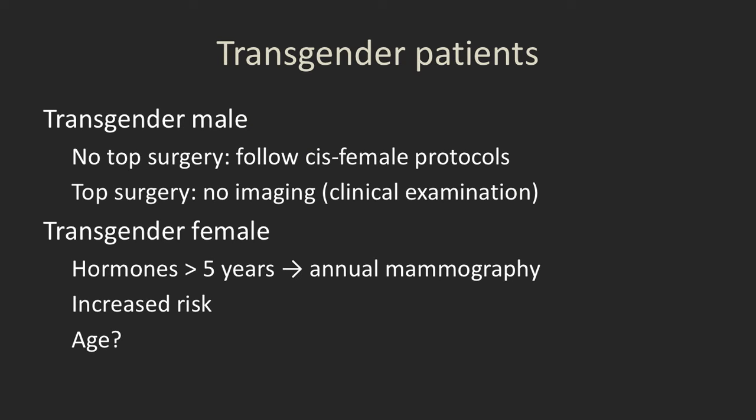Transgender patients are an increasingly large population to manage. A transgender male without top surgery should follow cisgender female protocols — annual or biannual starting at age 40. If they've had top surgery with bilateral mastectomies, no imaging is needed but they should have regular clinical examinations because not all breast tissue can be removed. For transgender females who have been on hormones more than five years, annual mammography is recommended as they are at increased risk of breast cancer, though there are no good randomized trials on when this should start or stop.